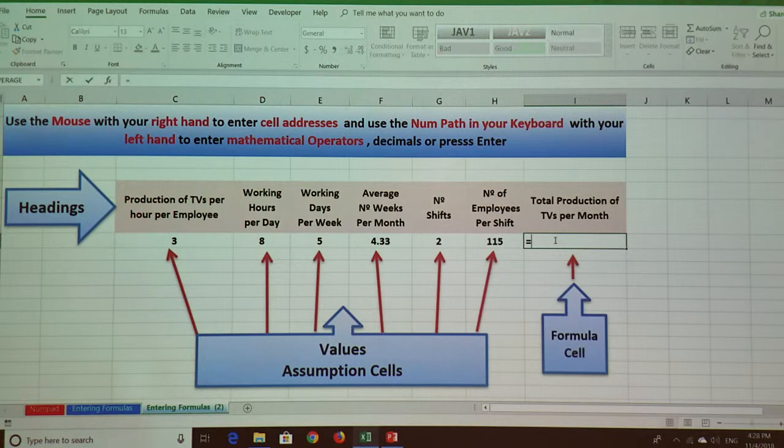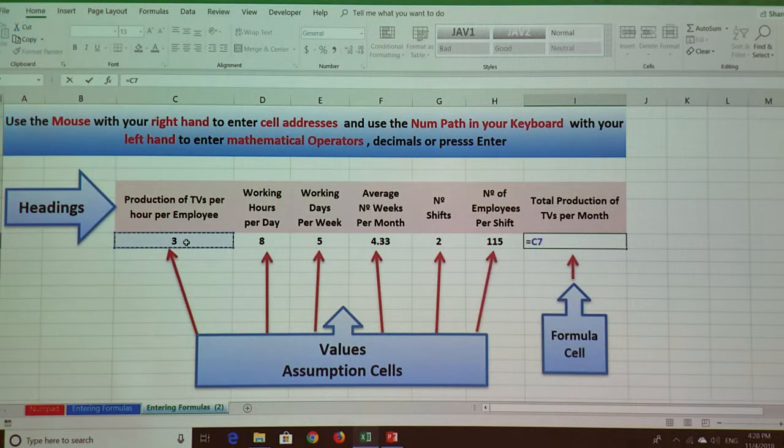First, we enter the equal sign. Then we click the first value, then multiplication. Then we click the second value. We enter the multiplication sign.